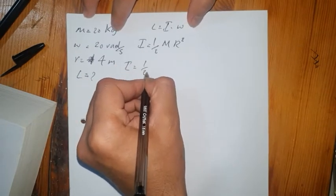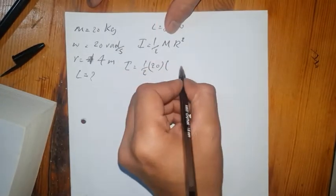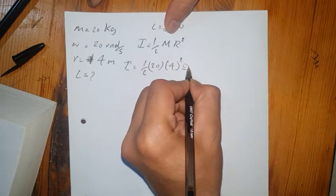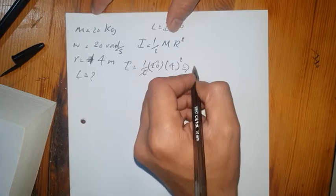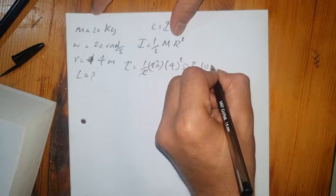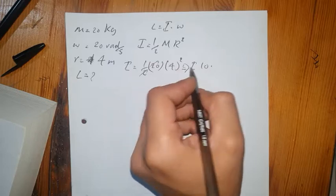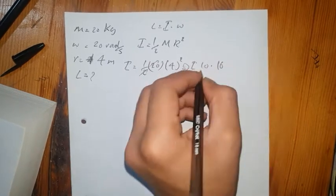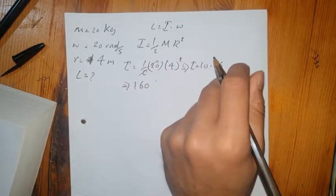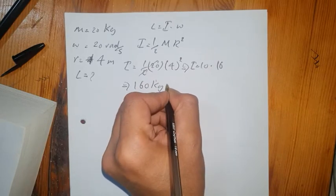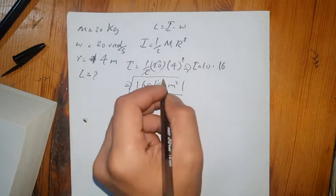So I equals one-half times mass, where mass is 20, times radius squared, where radius is 4. That gives us one-half times 20 times 16. So it's 10 times 16, which equals 160 kilogram meters squared. This is our moment of inertia I.